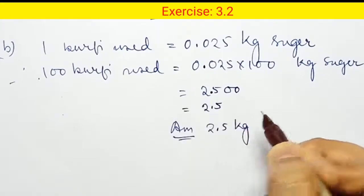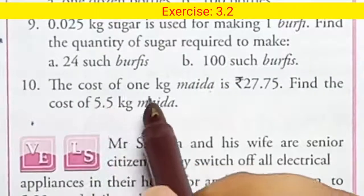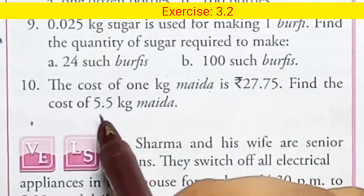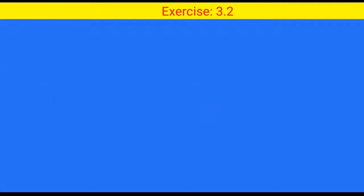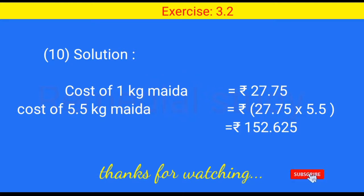The cost of 1 kg maida is rupees 27.75. Find the cost of 5.5 kg maida. Cost of 1 kg maida equals rupees 27.75. Cost of 5.5 kg maida equals 27.75 into 5.5. When we multiply both numbers we get rupees 152.625.